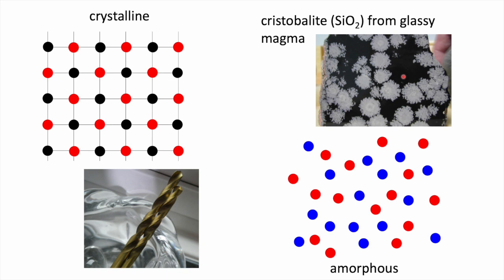The other thing to note very carefully is that a crystal is necessarily anisotropic. Anisotropic means that properties, spacings, etc. change with direction. For example, the spacing between atoms in one direction is not the same as the spacing in another direction. Furthermore, the properties will be different if you measure them along different directions. So the inherent feature of a crystal is that it is anisotropic, and there is no possibility of finding a crystal which is isotropic.